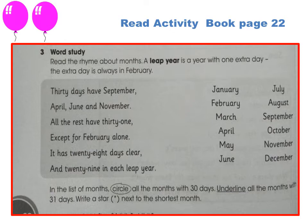They are January, February, March, April, May, June, July, August, September, October, November, and December.